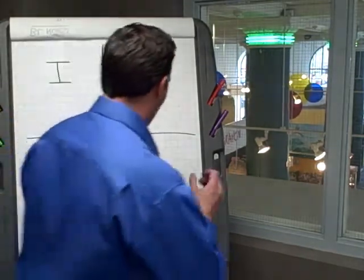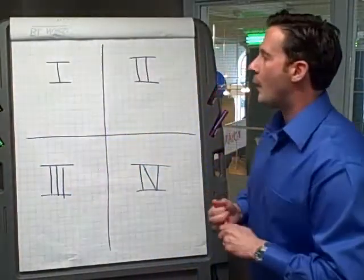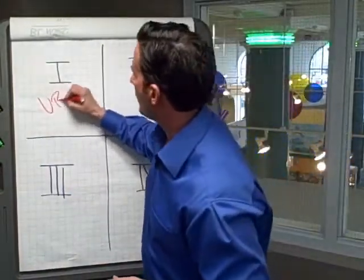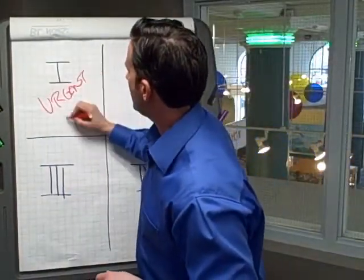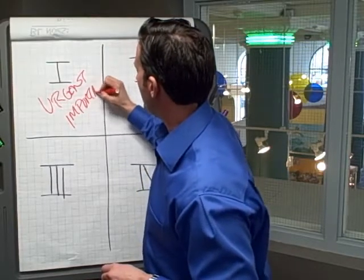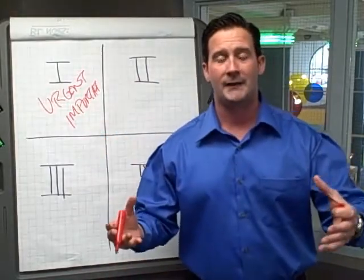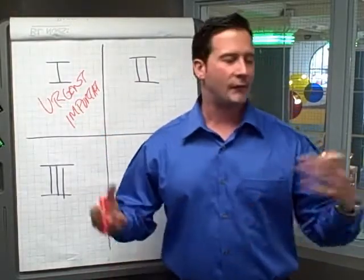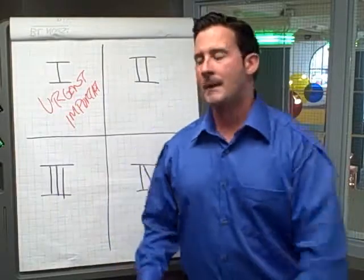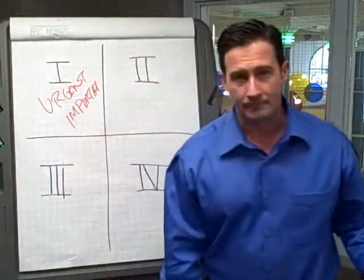Now, the power in this is Quadrant 1 is doing things that are both urgent and important. Urgent and important. These are crises, these are accidents, these are deadline-driven activities, commitments. If you have a seminar that you've got to do, an event you've got to put on, that's living in Quadrant 1.